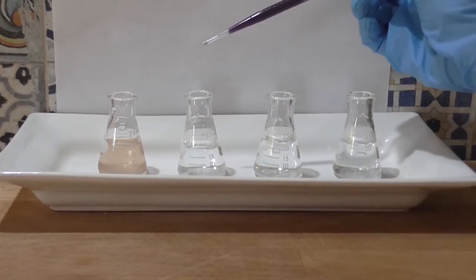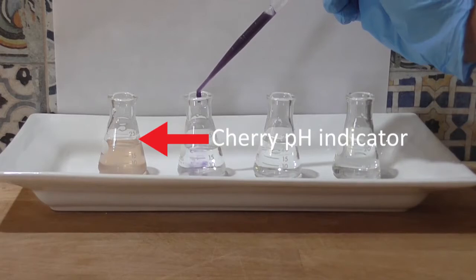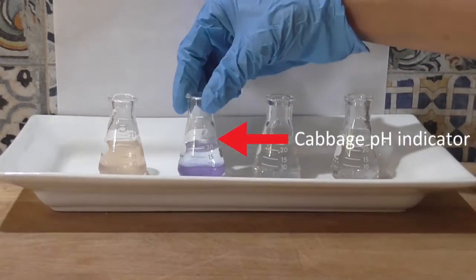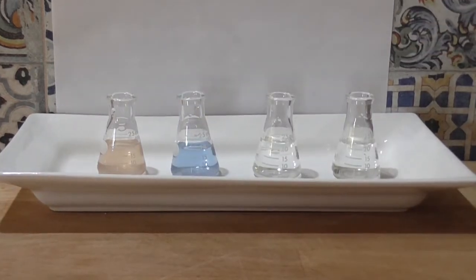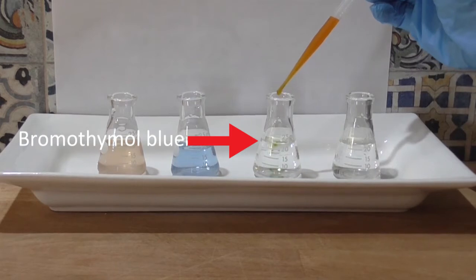Over here going from left to right I have my homemade cherry juice indicator, homemade cabbage juice indicator, bromothymol blue, and phenolphthalein. Once again these indicators are in approximately 20 milliliters of tap water.